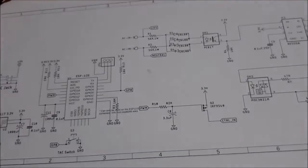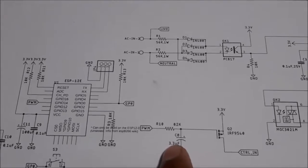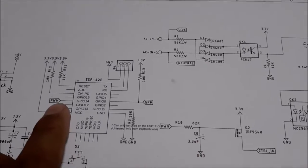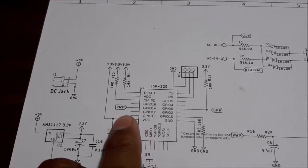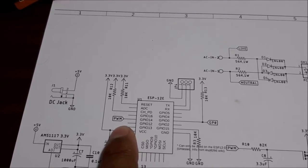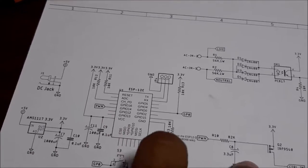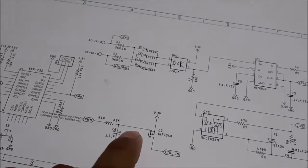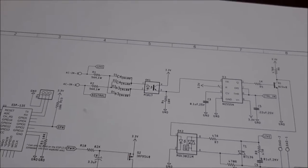This is the RC filter circuit where the PWM signal, this is the output pin of the ESP, when the PWM signal gets converted into DC voltage, the DC voltage drives this MOSFET.